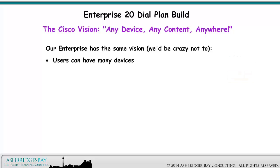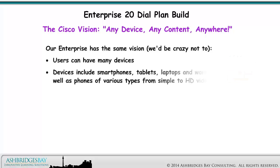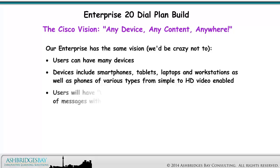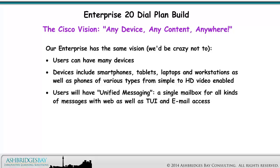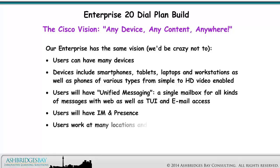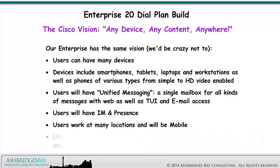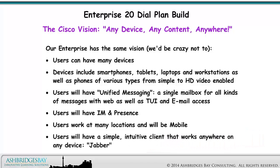Users can have many devices. Devices include smartphones, tablets, laptops and workstations, as well as phones of various types from simple to HD video enabled. Users will have unified messaging — a single mailbox for all kinds of messages, with web as well as TUI and email access. Users will have IM and presence, work at many locations, and will be mobile. Users will have a simple, intuitive client that works anywhere on any device: Jabber.